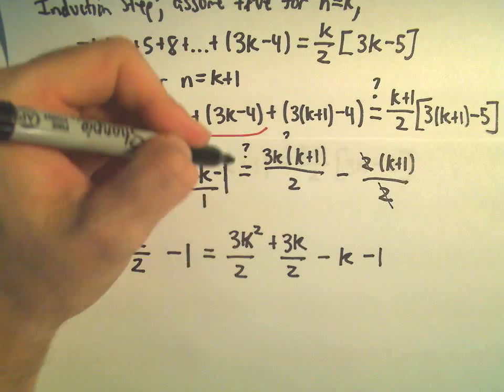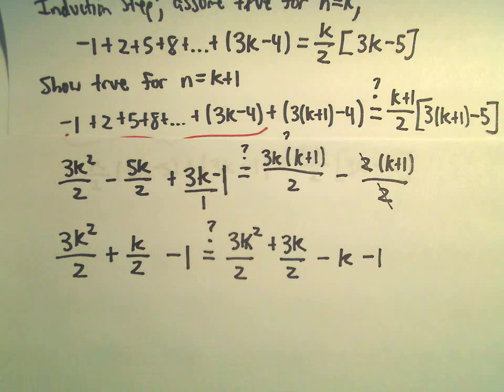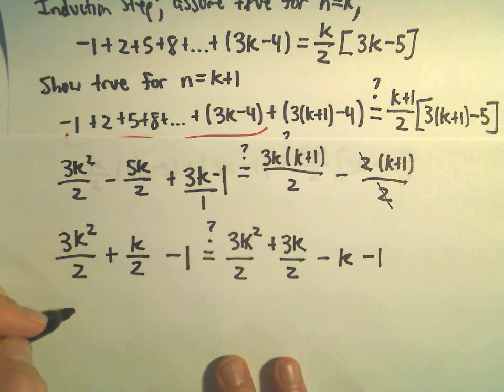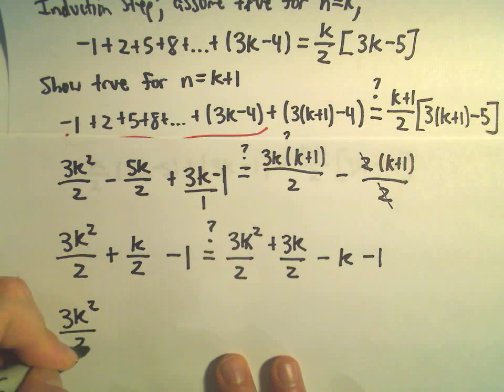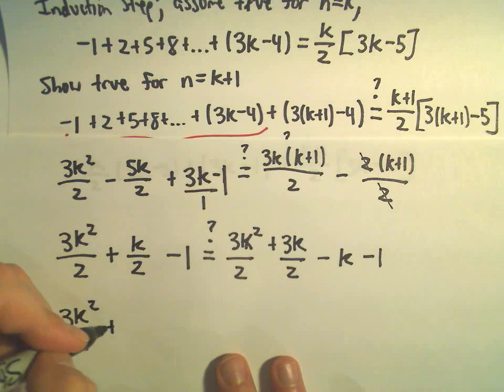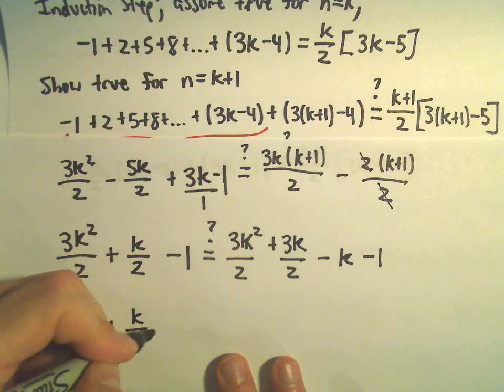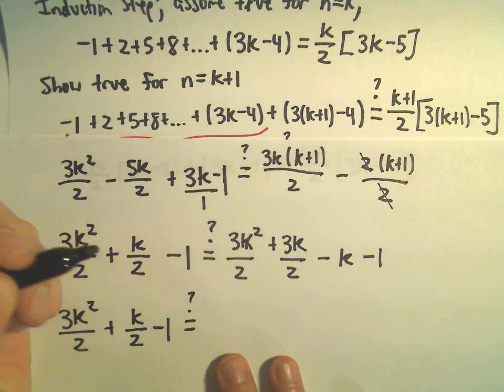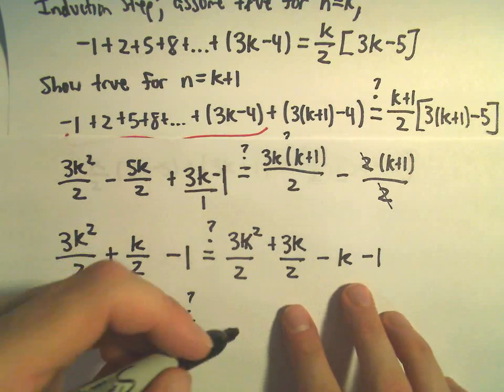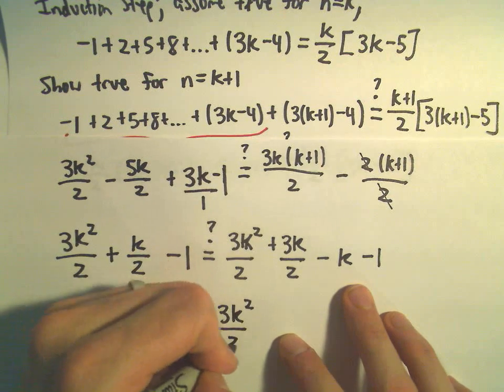Well, let's see, again, I should still have my question marks here, because I'm trying to justify, in fact, that these are equal. So, I'm kind of asking myself, are these equal? 3k squared over 2 plus k over 2 minus 1. Well, I think we could get some common denominators again on the right side.